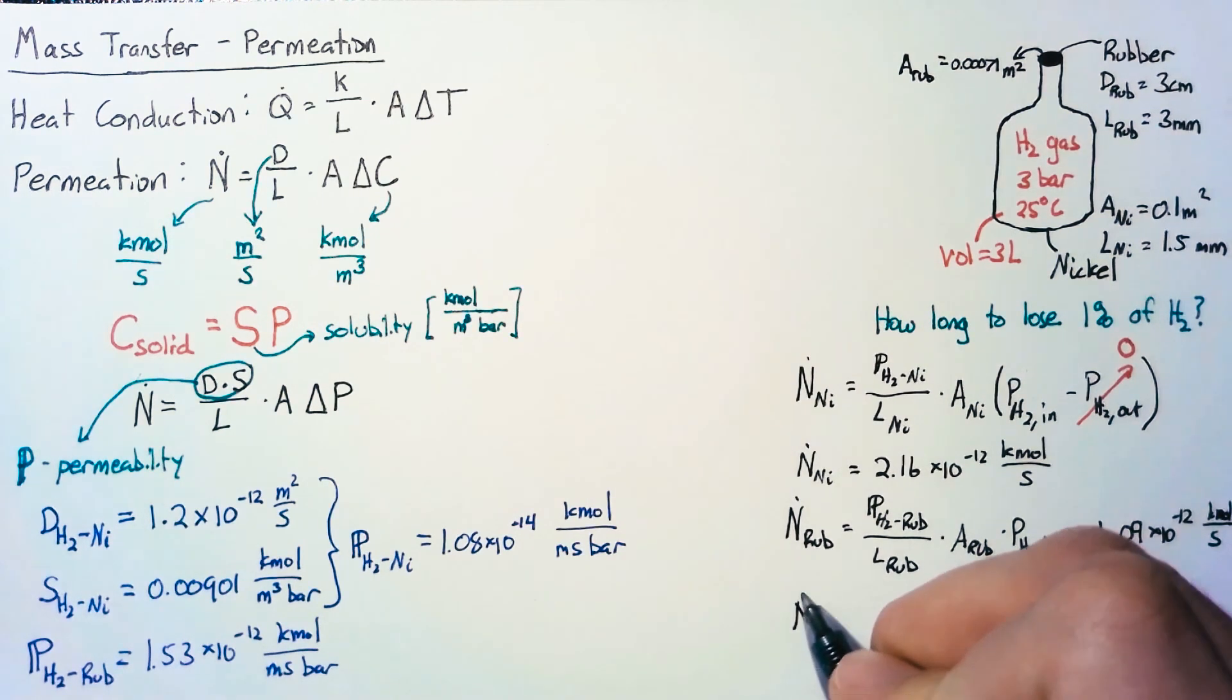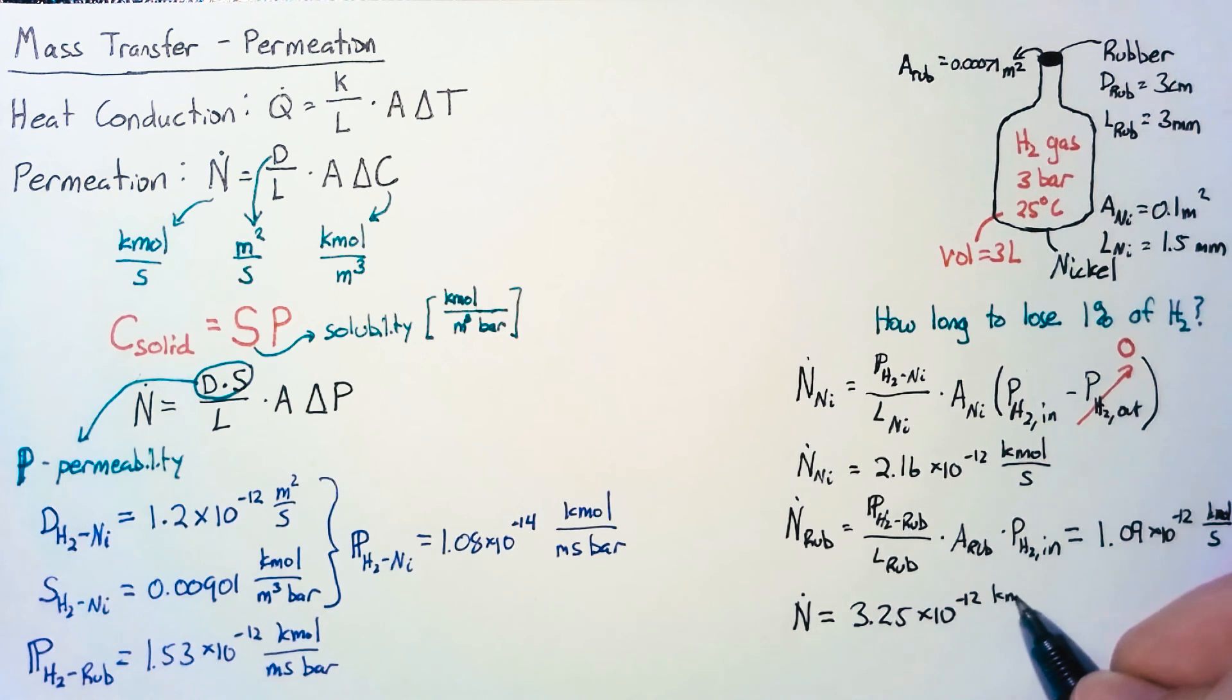Our total molar flow rate is just the sum of those two values, which is 3.25 × 10⁻¹² kilomoles per second.